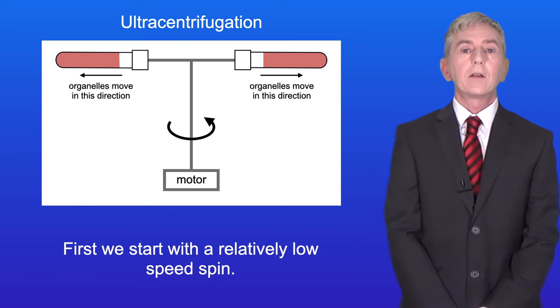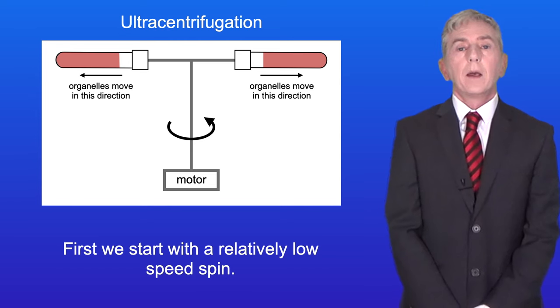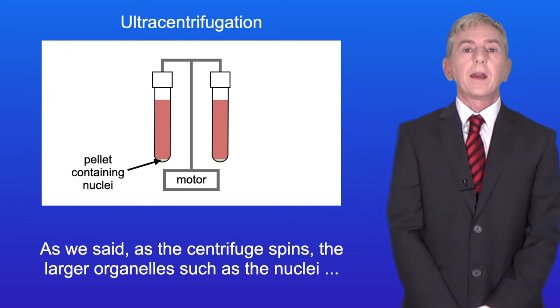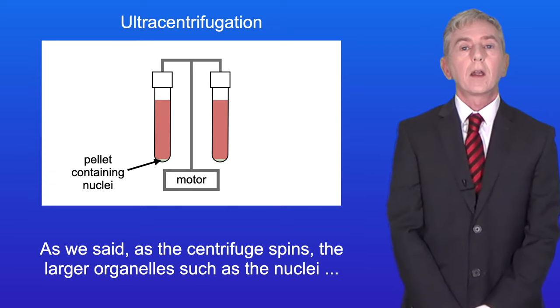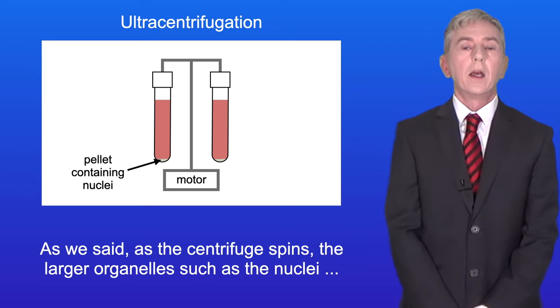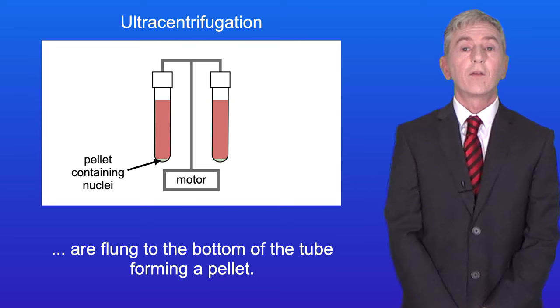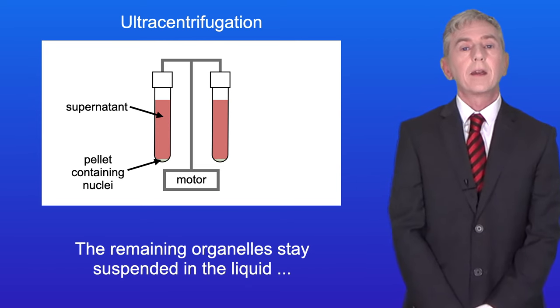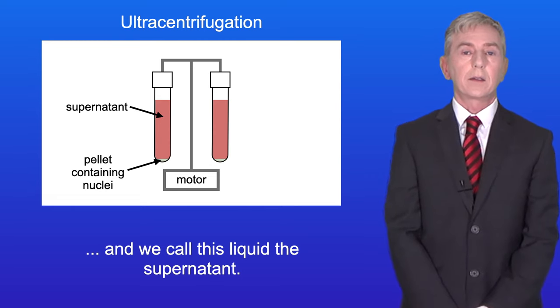First we start with a relatively low speed spin. At the end of the spin the tube looks like this. As we said as the centrifuge spins the larger organelles such as the nuclei are flung to the bottom of the tube forming a pellet. The remaining organelles stay suspended in the liquid and we call this liquid the supernatant.